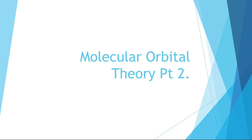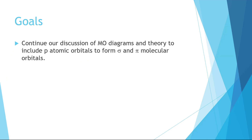Molecular Orbital Theory, Part 2. We're now going to extend our discussion to include molecular orbitals that are formed by combining p orbitals. These will form both sigma and pi molecular orbitals. Please do not watch this video without watching Part 1 first — it's really not a standalone video, and it's going to be very confusing if you haven't seen Part 1.